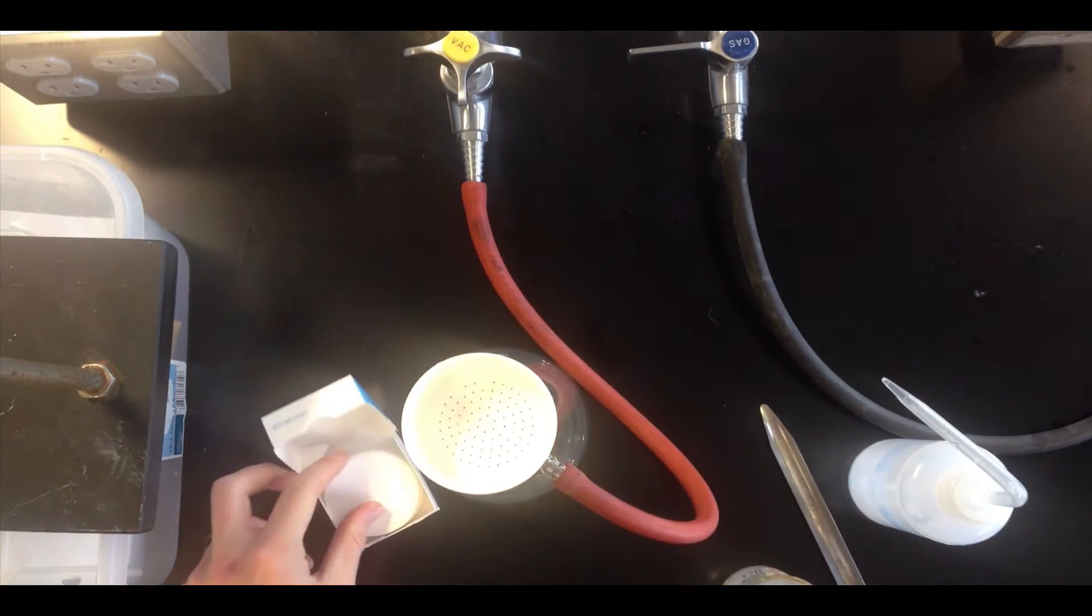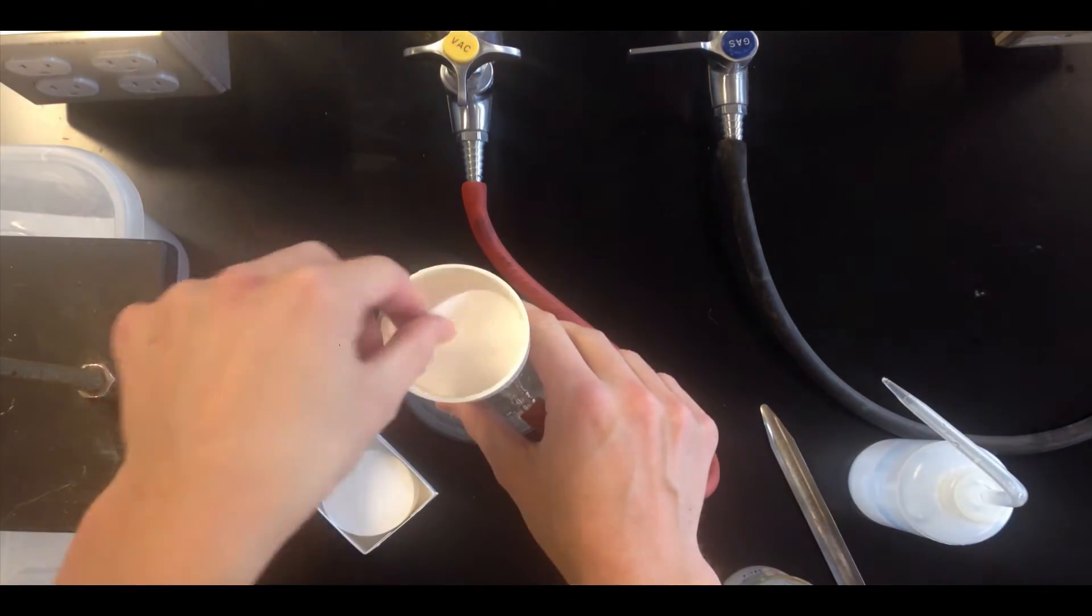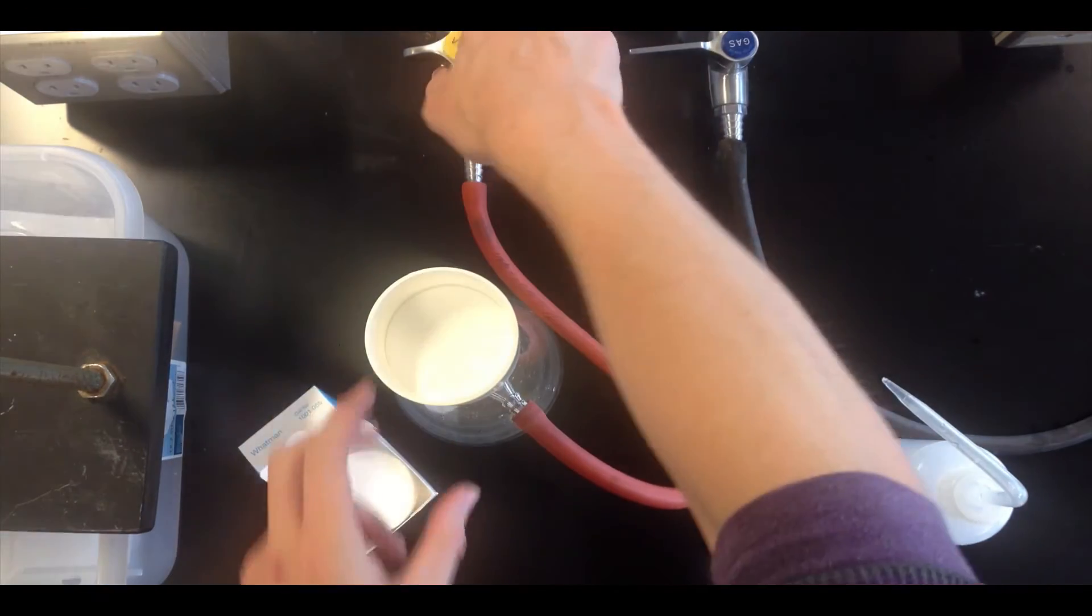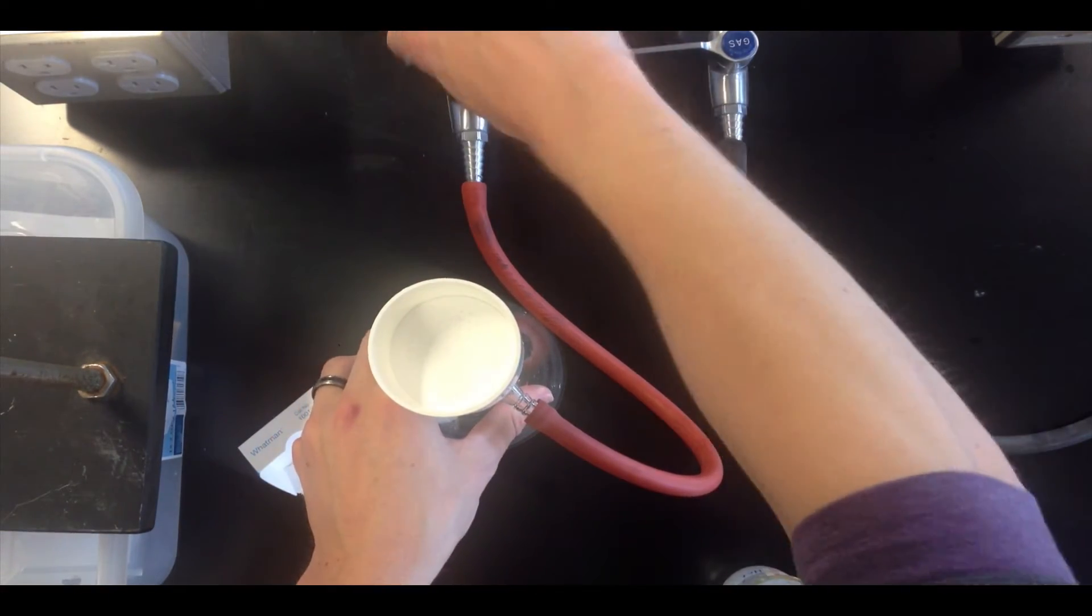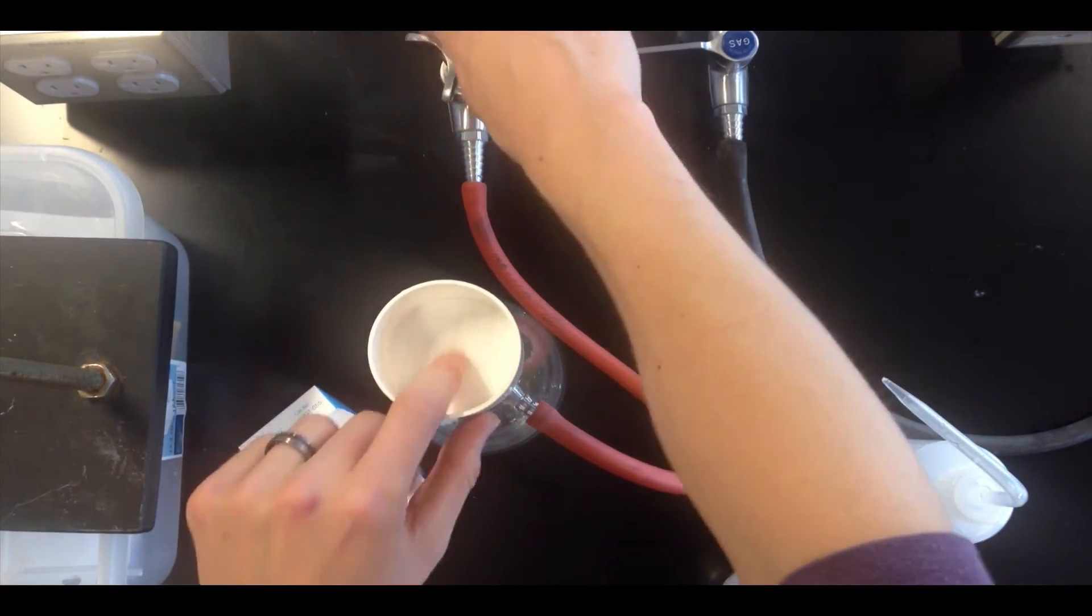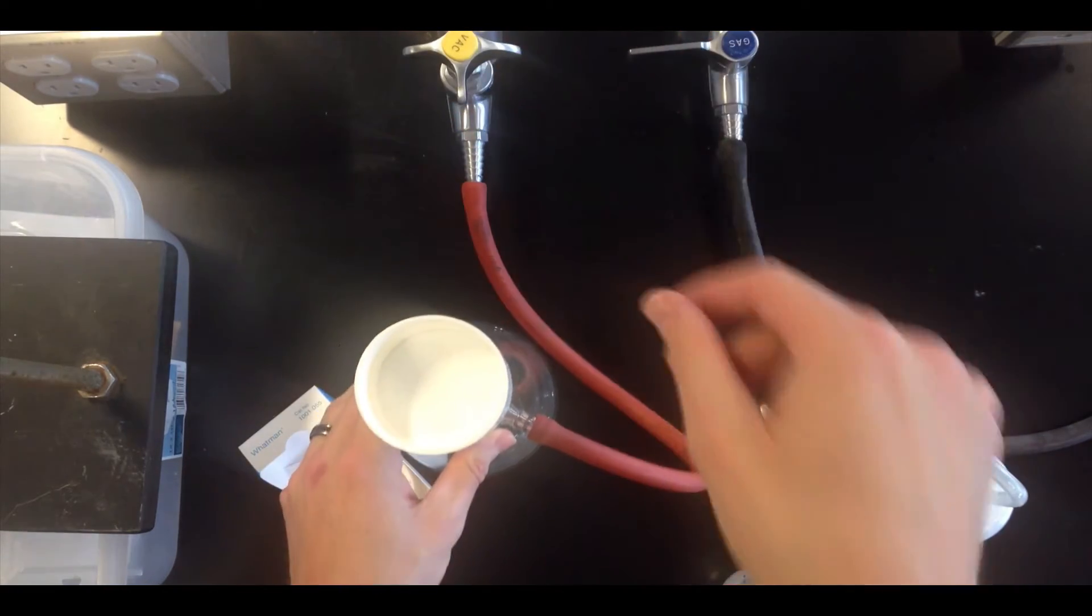That's pretty much all there is to setting up the apparatus. We'll throw in a piece of filter paper on the top as well, and now we can go ahead and turn the vacuum on, and this is going to pull that filter paper right down on top of the holes in the Buechner funnel.